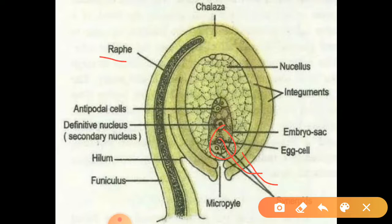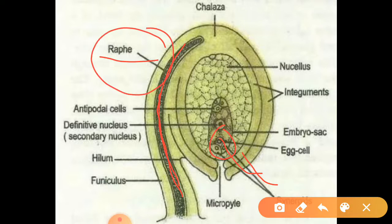Next one is raphe. It is the portion of the funiculus that is united to the ovule. That portion we can call as raphe. Next we can learn about embryo sac — it is an oval-shaped body where egg cells are present. That oval-shaped body we can call as embryo sac.